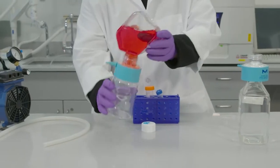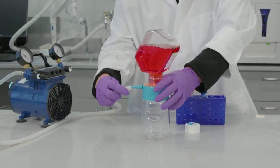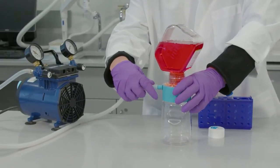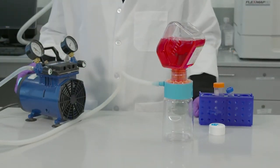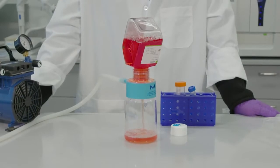Invert the assembly and attach one end of the vacuum tubing to the system and the other end to a vacuum source. Apply vacuum until filtration is complete.